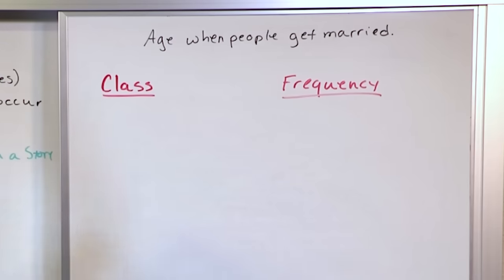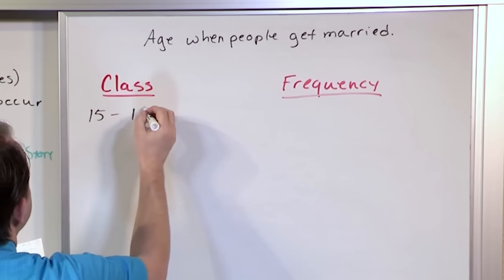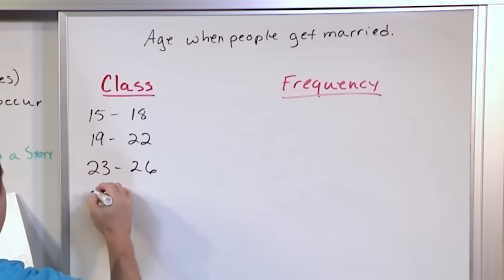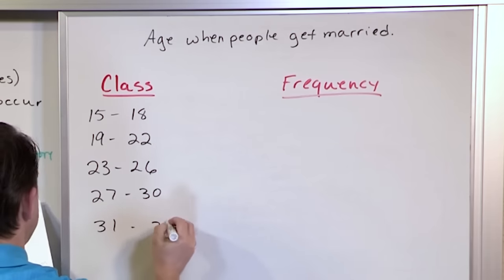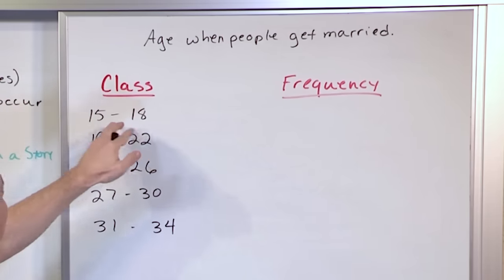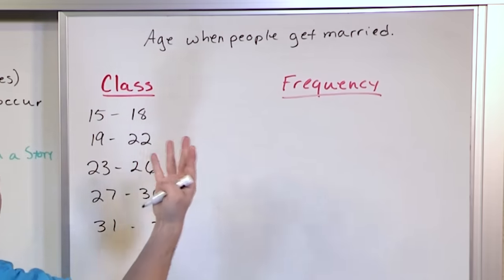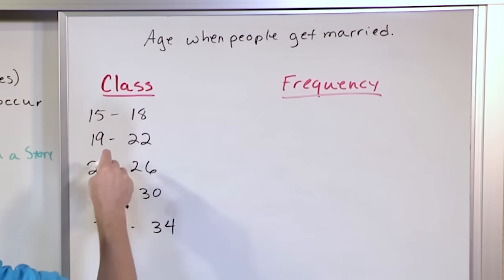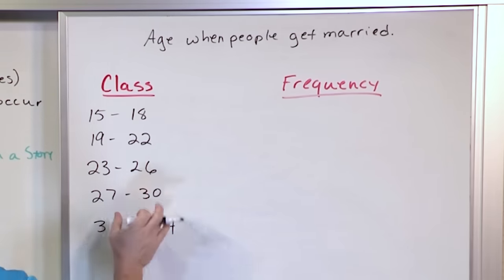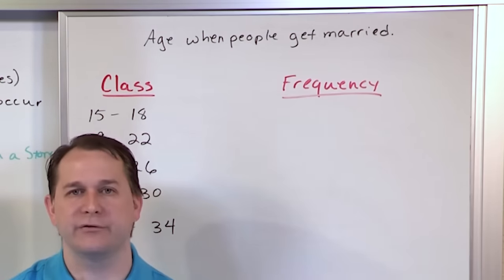So you construct your frequency table with a class column and a frequency column. The classes might be: 15–18, 19–22, 23–26, 27–30, and 31–34 — those are ages of people. Notice the class widths are all the same: 15, 16, 17, 18 is four values; 19, 20, 21, 22 is four; and so on — class width is four for every class. And there's no overlap — one class ends at 18 and the next starts at 19.